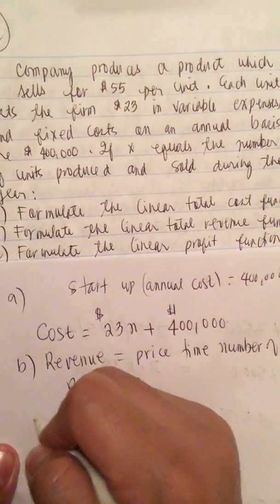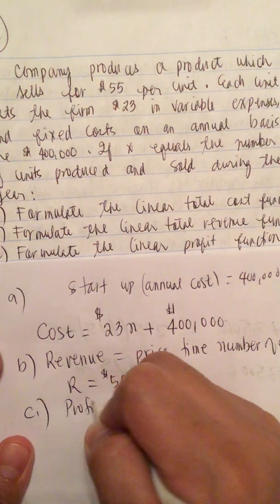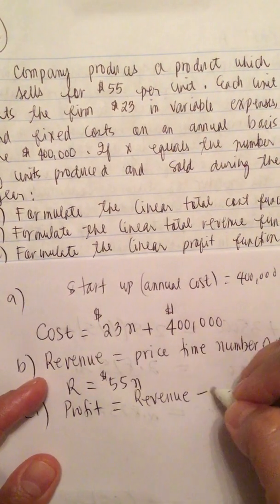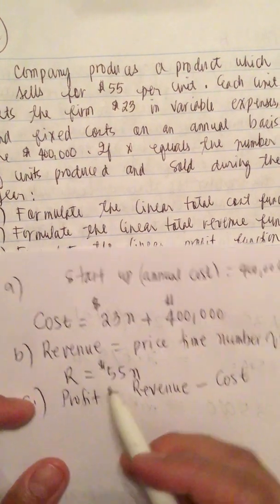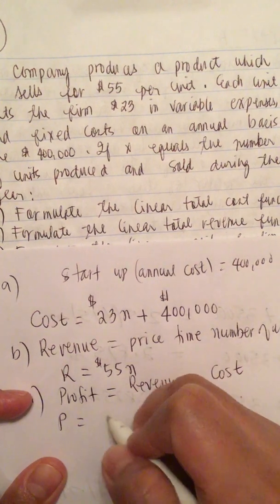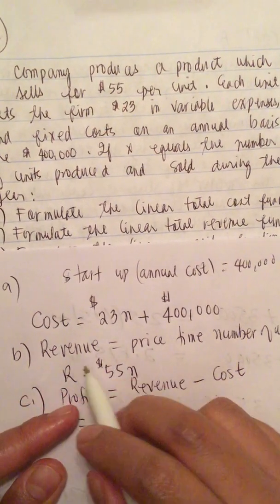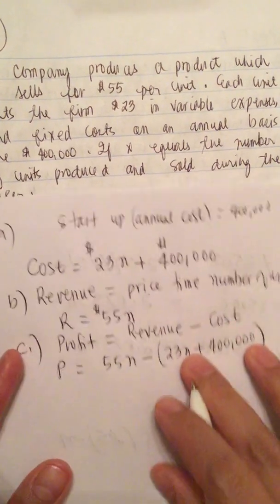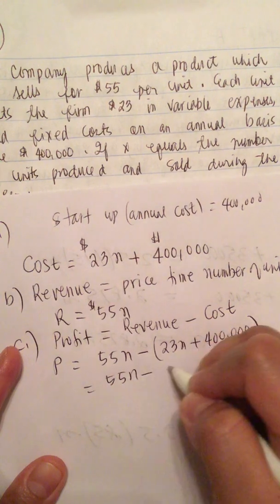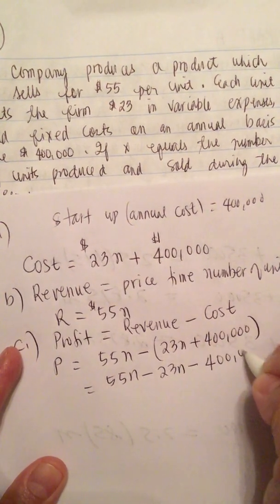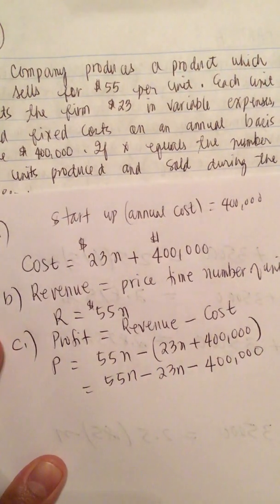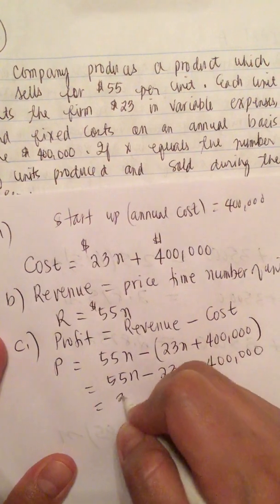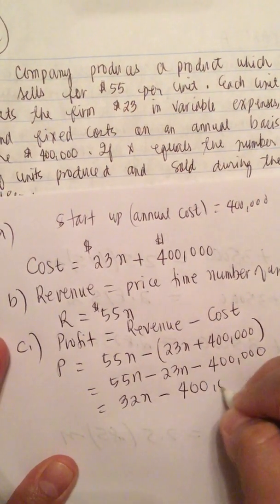Formulate the linear profit function. So profit equals the revenue minus the cost. So revenue equals 55N. So P equals 55N minus the cost which is 23N plus 400,000. So this is equal to 55N minus 23N minus 400,000. So this is equal to 55N minus 23N is 32N minus 400,000.